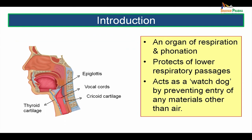Larynx. It is an organ of respiration and phonation. It protects the lower respiratory passages. It acts as a watchdog by preventing entry of any materials other than air. The picture here shows us a sagittal section through the head and neck. We can see here the epiglottis, the thyroid cartilage and the cricoid cartilage along with the vocal cords.